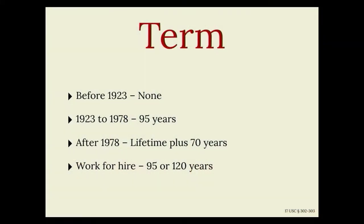The last bit of copyright to define is how long the protections last. The Constitution specified that protections would be 'for limited times.' Anything created and published before 1923 is no longer subject to copyright at all. Anything published between 1923 and 1978 is protected for at most 95 years, depending on if they remembered to fill out all the correct forms. Works published after 1978 and owned by a human being get the lifetime of the author and then 70 years after their death, while works owned by a company are either 95 years from publication or 120 years from creation, whichever is shorter.